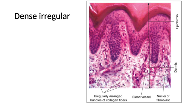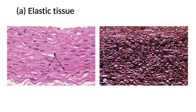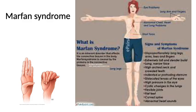Dense irregular connective tissue has collagen fibers that are dense but not regularly arranged. The example is the dermis of the skin. Its function is to provide strength to the structure. Elastic tissue has more elastic fibers that are thin and wave-like; example is ligamentum nuchae. This slide is stained by Verhoff stain, which stains elastic fibers black.